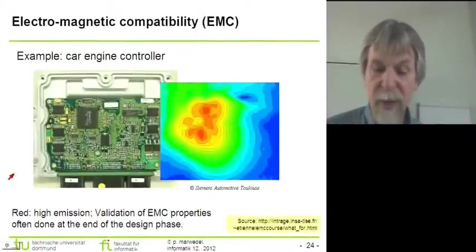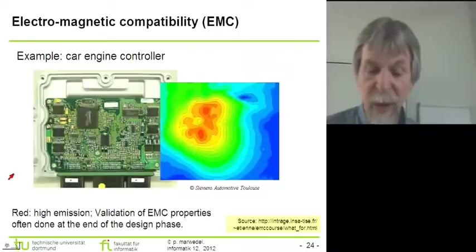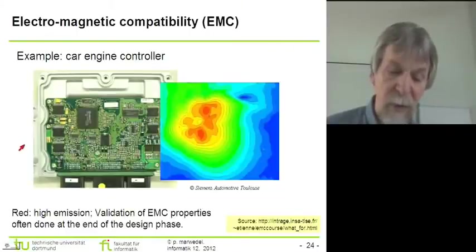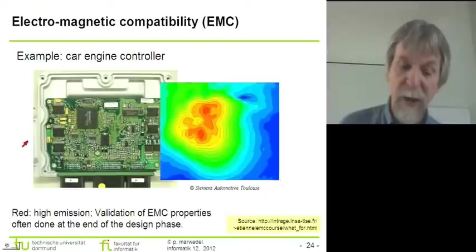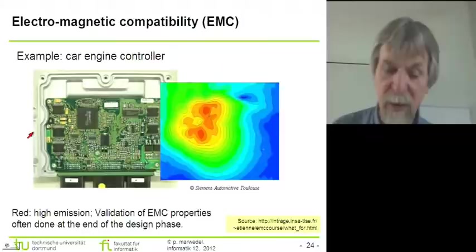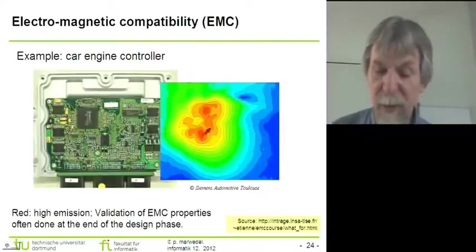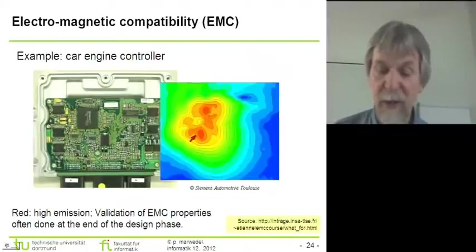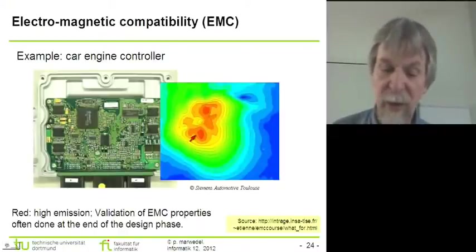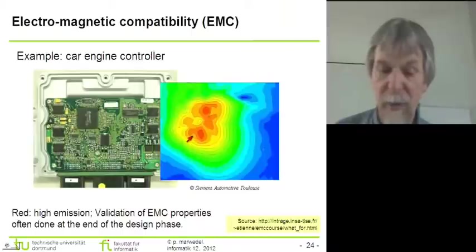There may be radiation emitted from certain electronic components in the car. For example, in this case we have opened the case of some car engine controller. After opening the case, it's possible to measure the radiation that is originating from that car engine controller. We can use this information to make sure that there is no influence of that car engine controller onto other components by electromagnetic radiation.